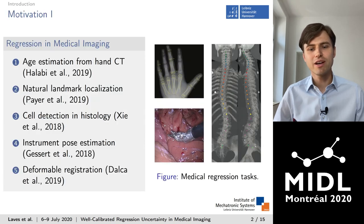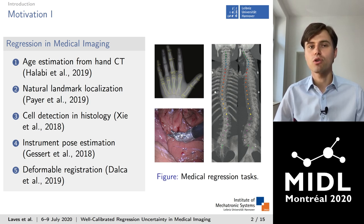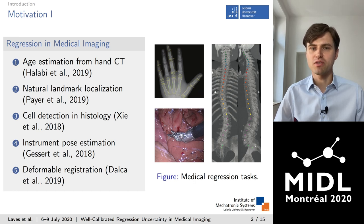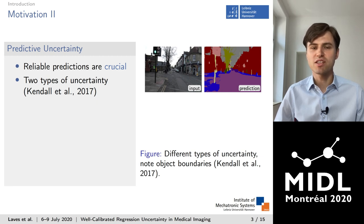Regression in medical imaging with deep learning has been applied to a variety of tasks including age estimation from hand X-ray, natural landmark localization, cell detection in histology, or instrument pose estimation by predicting object border coordinates. Segmentation can also be performed as a regression task, and in deformable registration a continuous displacement field is predicted for each coordinate of the input image, which has recently been addressed by CNNs.